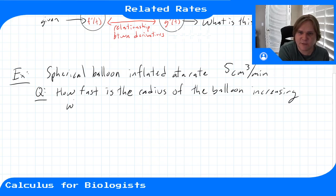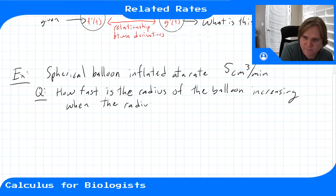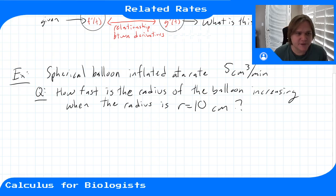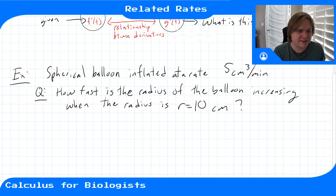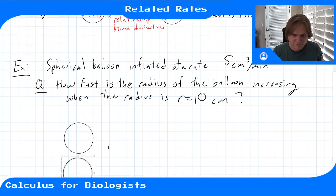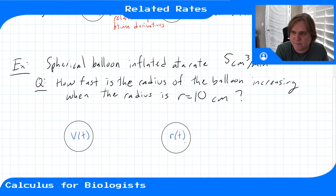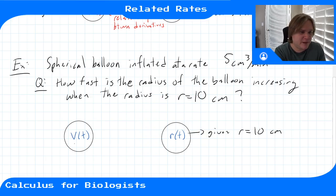The question is: how fast is the radius of the balloon increasing when the radius is equal to 10 centimeters? This question tells you that we have a volume that increases at a particular rate, and we're trying to find the rate of change of the radius. There are two variables in this problem: the volume of the balloon and the radius of the balloon. We're given that the radius is 10 centimeters.